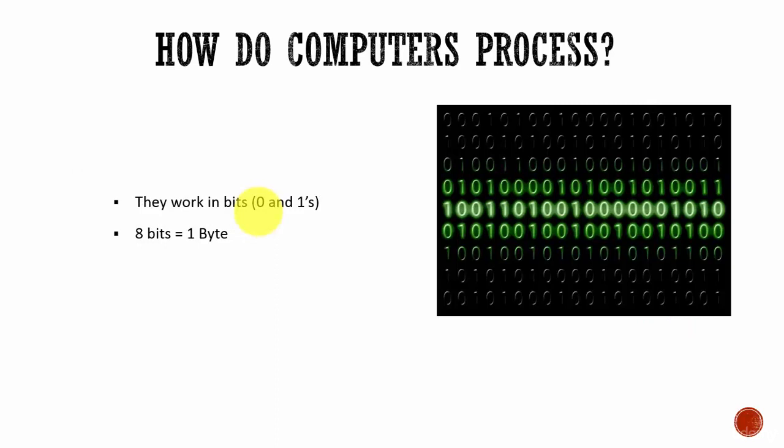How do computers process data? That's a basic question. They process in the form of zeros and ones, which we call bits. And obviously, 8 bits make 1 byte.